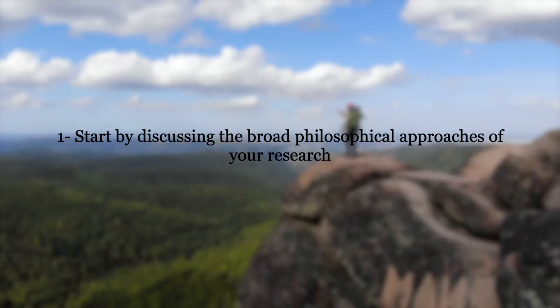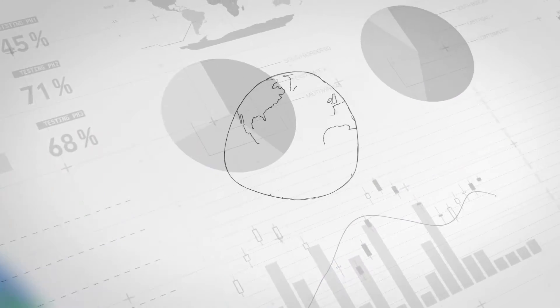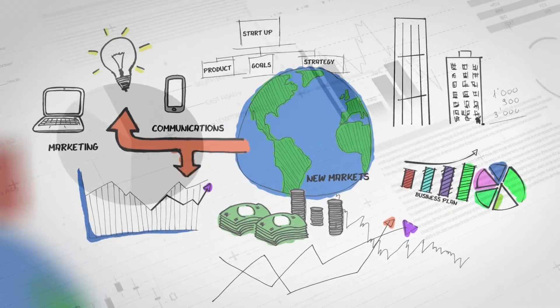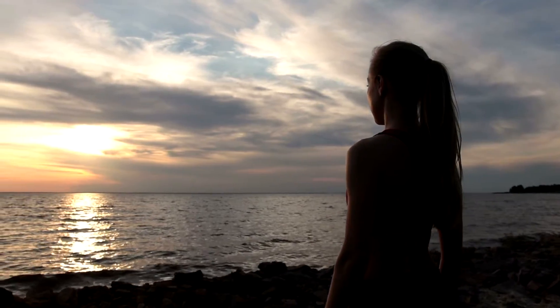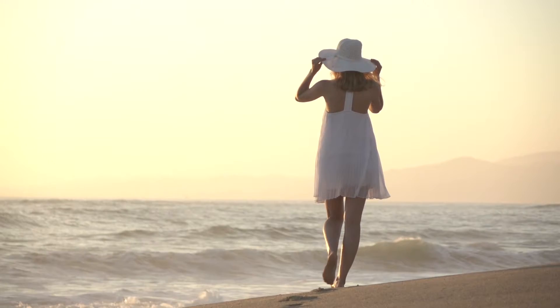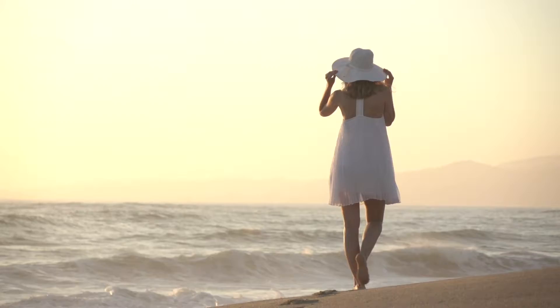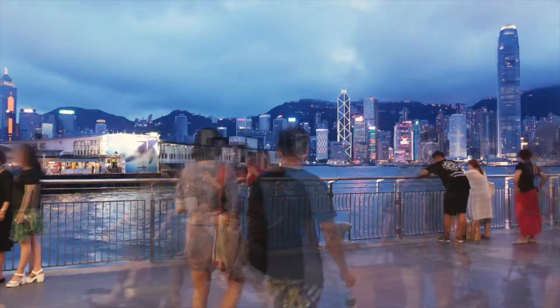Tip number one: start by discussing the broad philosophical approaches of your research. I know that sounds complicated, but it really isn't. Your research methods chapter ideally wants to start broad, focusing in on the more specific details as you go through. An ideal way to do this is to use the research onion approach. To begin, you should outline your philosophical approach — will your research be aligned with the scientific approach of things being black and white, or true or false? That tends to sit with quantitative research.